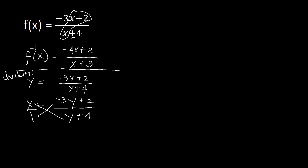Cross multiplying gives us: x times (y plus 4) equals 1 times (negative 3y plus 2), which simplifies to negative 3y plus 2. Distributing x gives us xy plus 4x equals negative 3y plus 2.